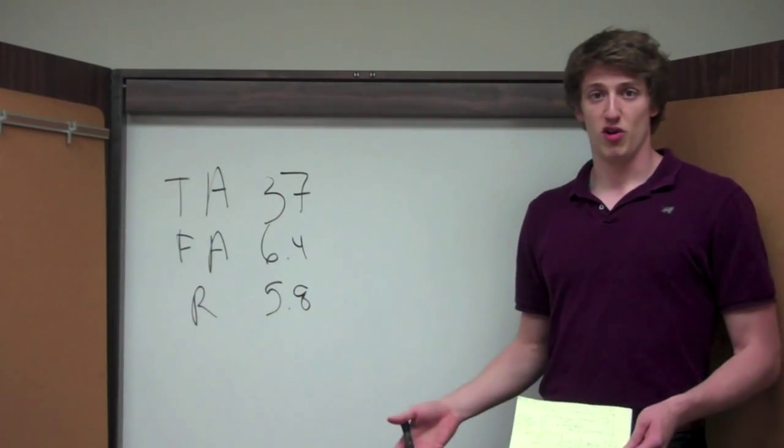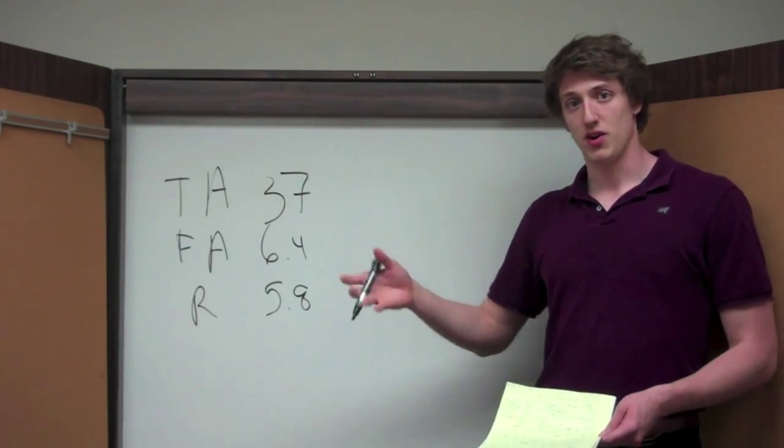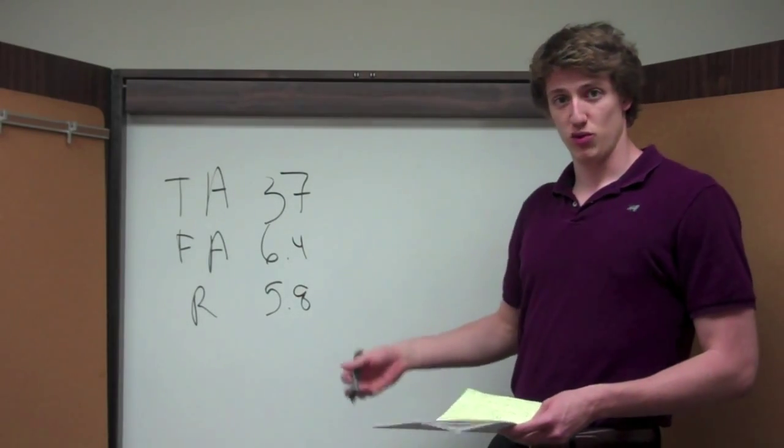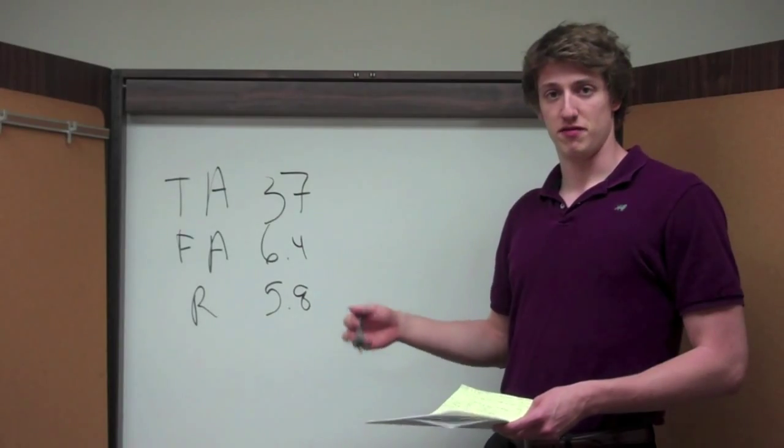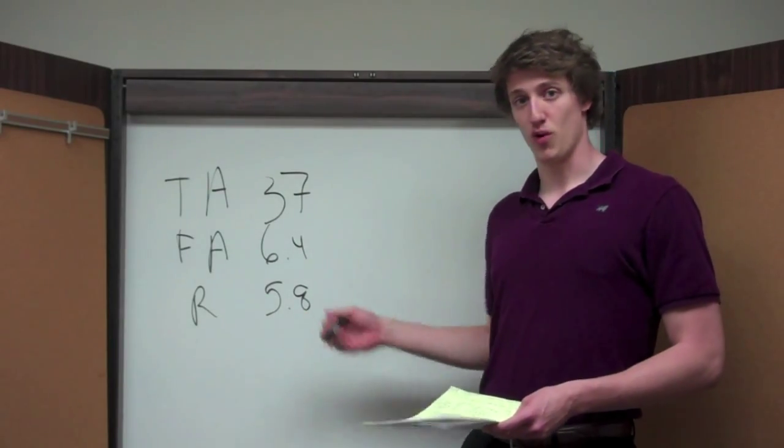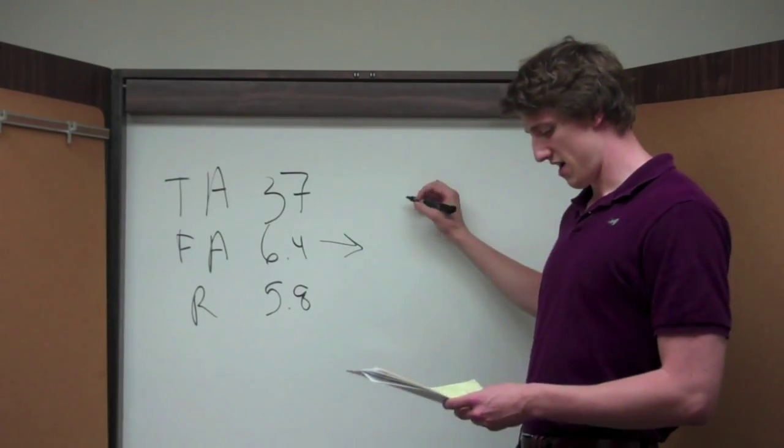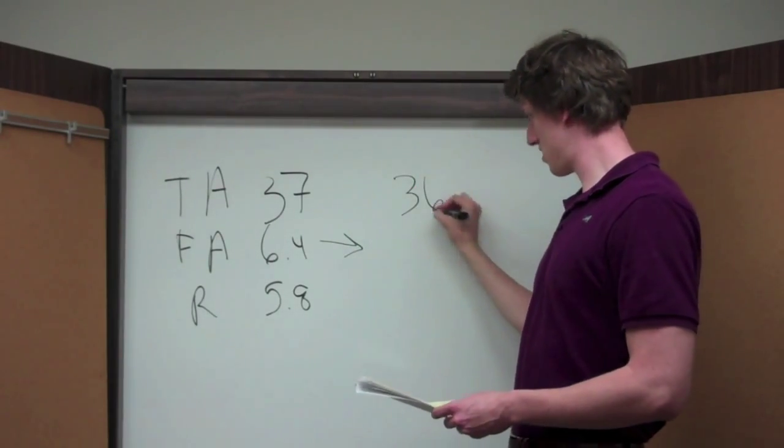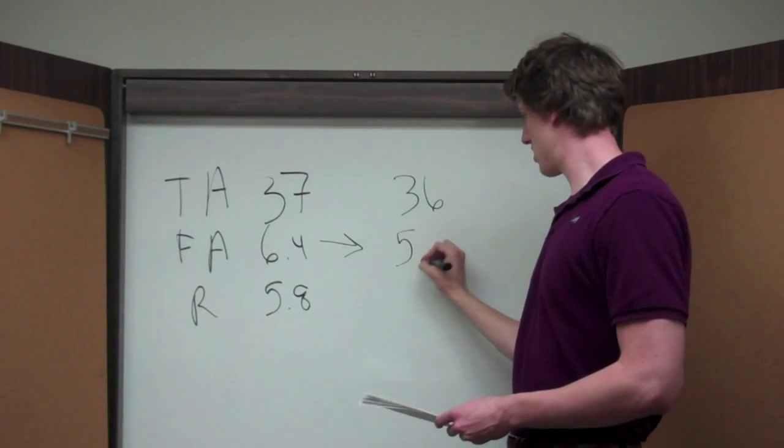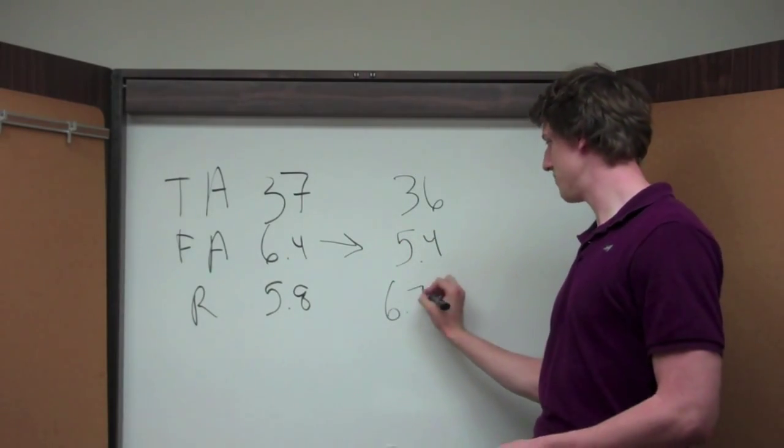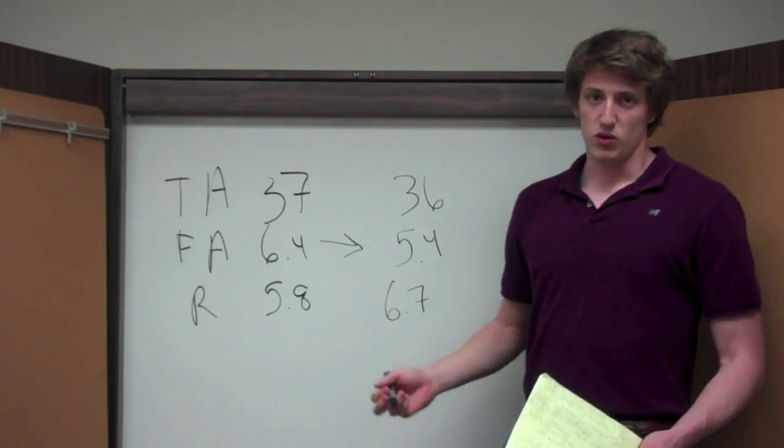So 5.8 is below our ideal 8 to 1 to 10 to 1. So if we add 7.2 fluid ounces of 50% liquid caustic per 100 gallons of bath solution, we now have a new ratio of 6.7. So we're still a little low.